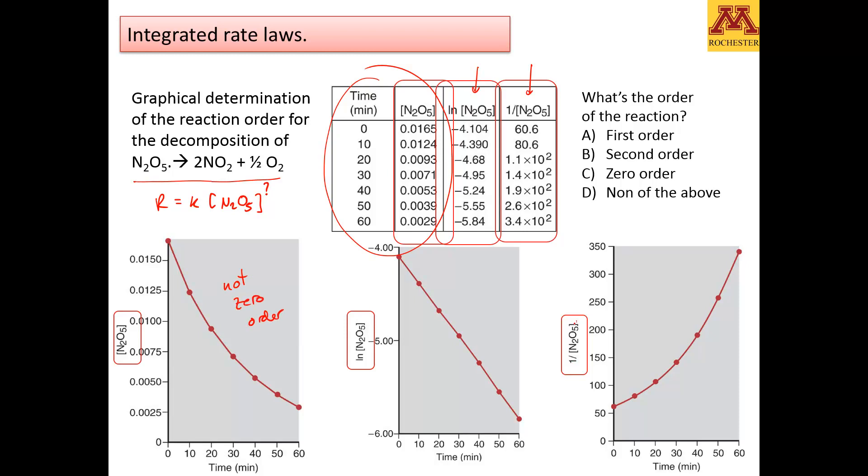When we plot the inverse of the concentration versus time and it's not a straight line, it means that it's not second-order. Finally, if we plot the logarithm versus time and it is a straight line, it means it is first-order.